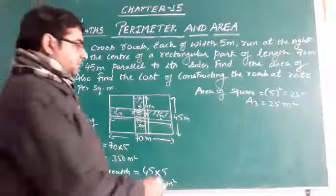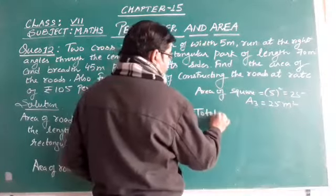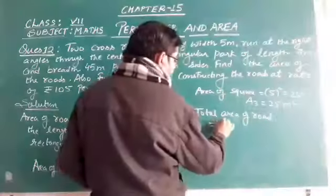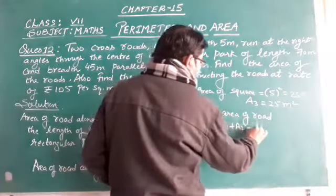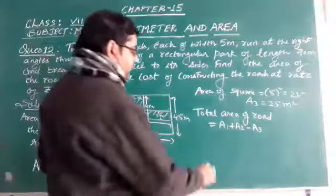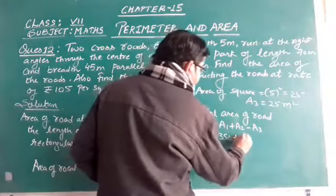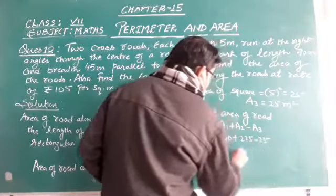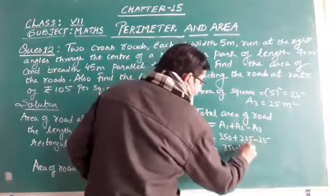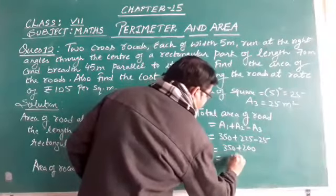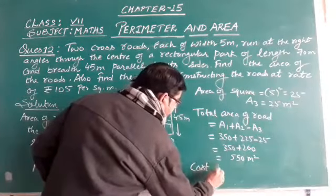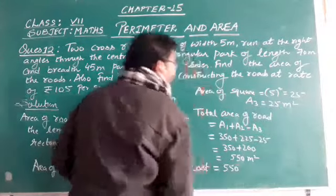Now total area of the road will be A1 plus A2 minus A3, because this square portion comes twice. Now so we subtract. So 350 plus 225 minus 25, so 350 plus 225 is 575, minus 25 we get 550. So we get 550 square meters.